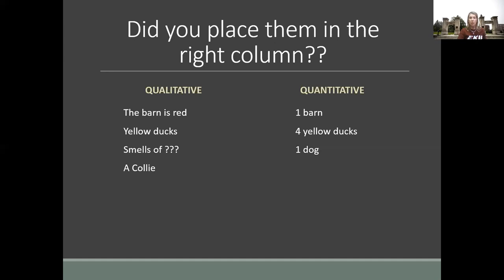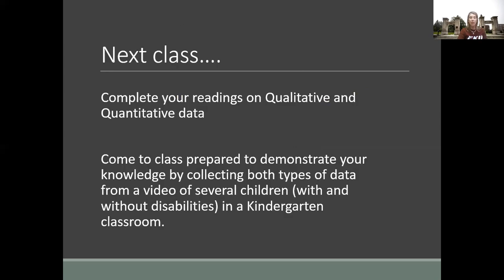If you remember that earlier slide, we were talking about program planning and progress monitoring. These are the pieces of information that directly support the decisions we make about how we plan for children and how we know that children are progressing or not progressing. For next class, I want you to complete your readings on qualitative and quantitative data. Come to class prepared to demonstrate your knowledge by collecting both types of data from a video of several children with and without disabilities in the kindergarten classroom. I'll see you next time.